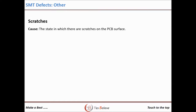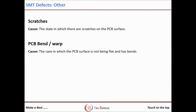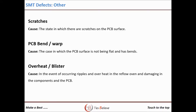Other defects related to the PCB include scratches, which occur on the PCB during the process or are present in the original PCB. PCB bend or warp occurs when the PCB surface is not flat and has bends — this occurs most often after one-side reflow. Overhead or blistering occurs when ripples and overheating in the reflow oven damage the components and PCB. Defects related to the PCB are also explained in the PCB video.